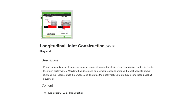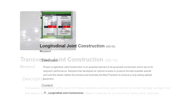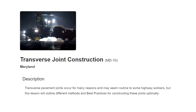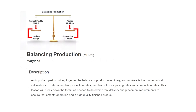Proper longitudinal joint construction is an essential element of all pavement construction and is key to its long-term performance. Maryland has developed an optimal process to produce the best possible asphalt joint, and this lesson details the process and illustrates best practices to produce a long-lasting asphalt pavement. Transverse pavement joints occur for many reasons and may seem routine to some highway workers, but this lesson will outline different methods and best practices for constructing these joints optimally.